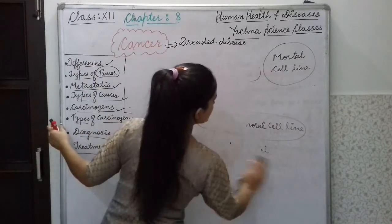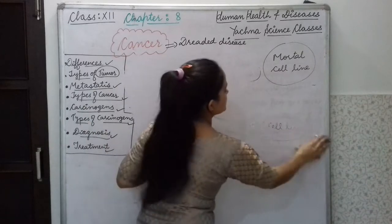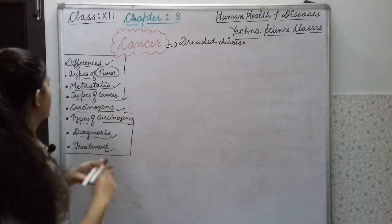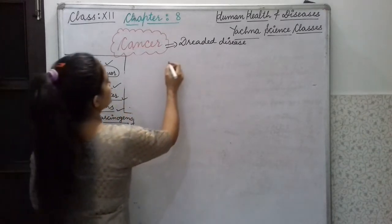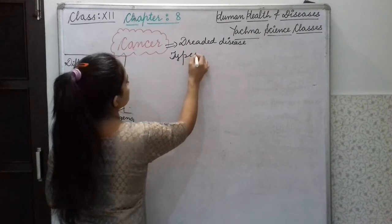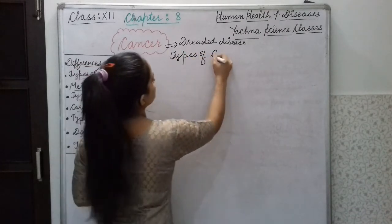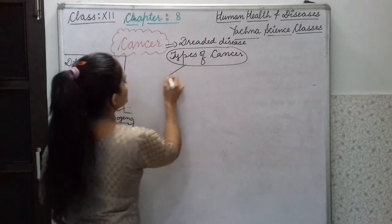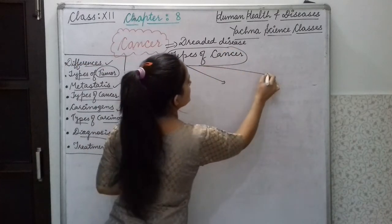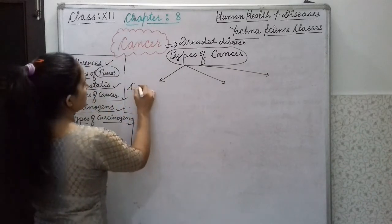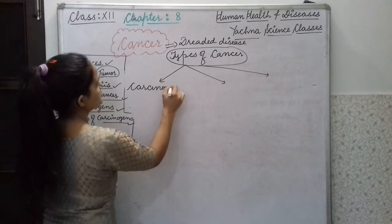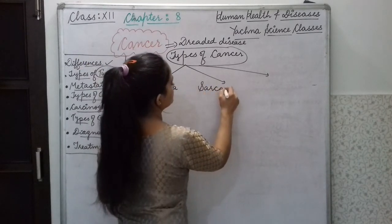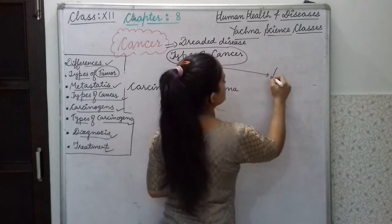Now we will discuss the types of cancer. There are many types, but mainly we will study three types according to our NCERT. The first type is carcinoma, the second is sarcoma, and the last is leukemia.